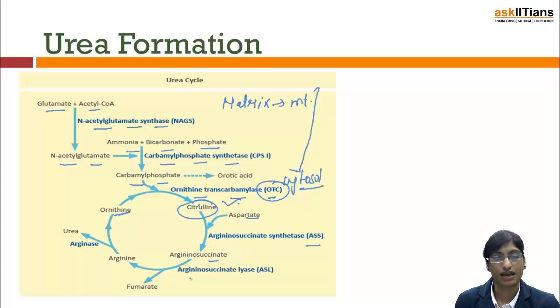And here the lyase enzyme takes entry and degradation occurs. Fumarate is formed and arginine is formed. So arginine further forms ornithine. And in between this reaction, enzyme involved is arginase and urea is excreted. And this is excreted out, transported to kidney.